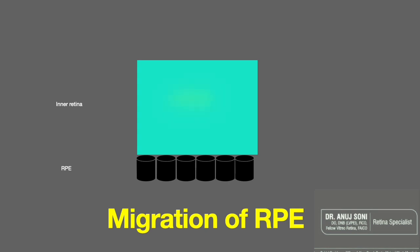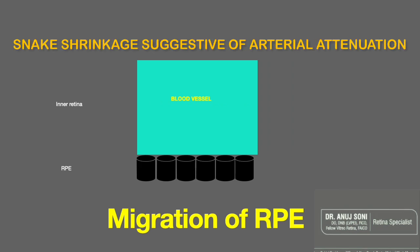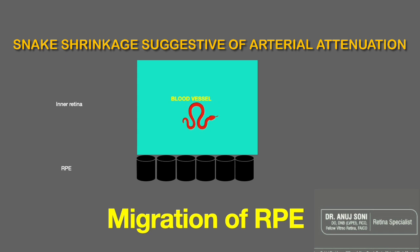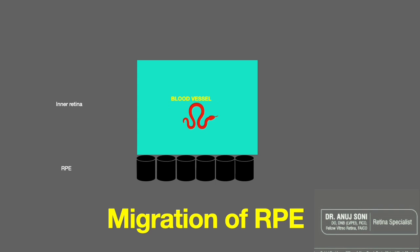Hence, the bony spicules seen in RP are characteristically perivascular. Why RPE cells are attracted to blood vessels is unknown, but there is an affinity of RPE cells toward the vascular lamina. There may also be secretion of cytokines from blood vessels, and increased oxygen tension in the blood vessels may attract the RPE cells.